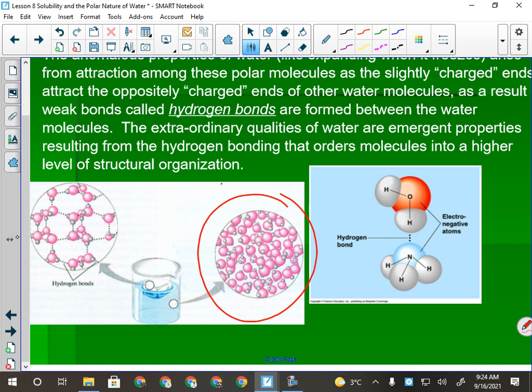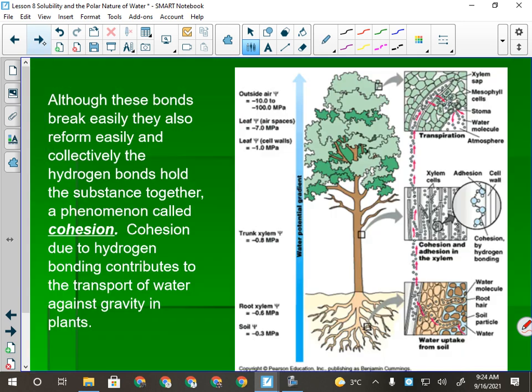Hydrogen bonds, like we said, are these weak bonds they form, but they cause this repulsion. Polar molecules cause this repulsion to happen. They cause the water to expand as it freezes. Life has evolved around the presence of water and around the properties of water.